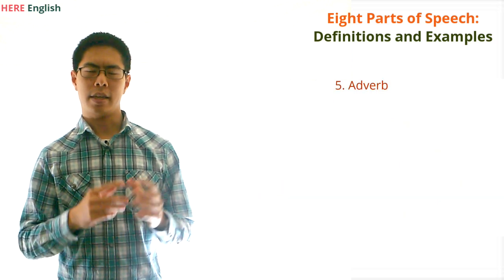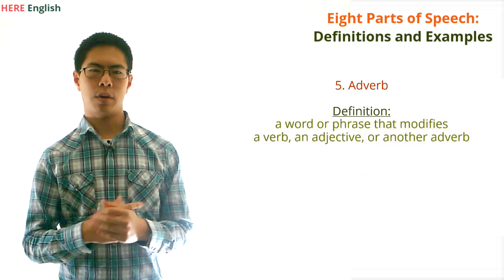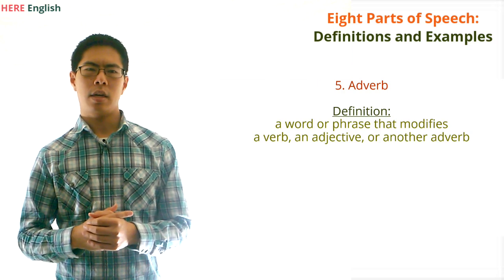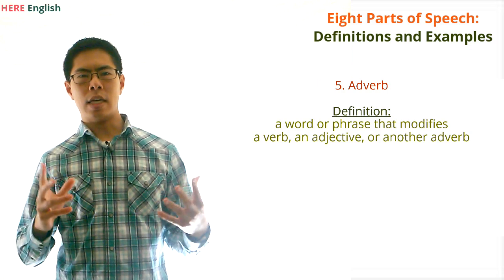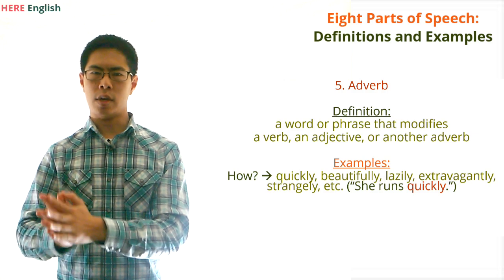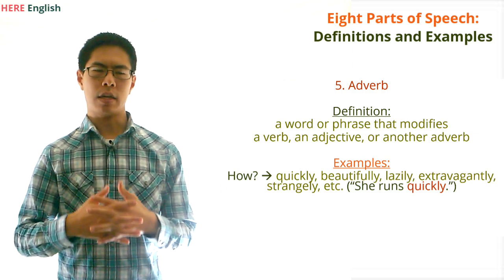Next up is adverbs. What is an adverb? An adverb is a word or phrase that modifies a verb, an adjective, or another adverb. A lot of adverbs end in ly such as quickly, beautifully, lazily, extravagantly, and strangely. If we said she runs quickly, the adverb quickly is modifying the word runs.